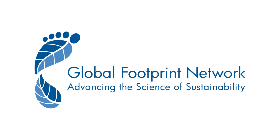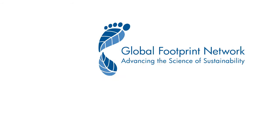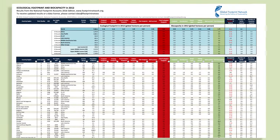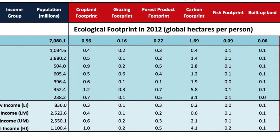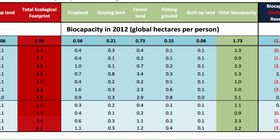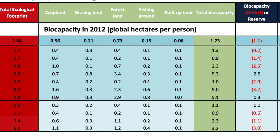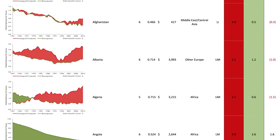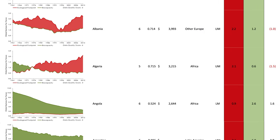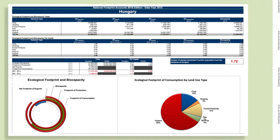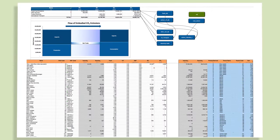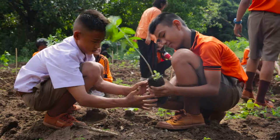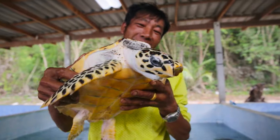Global Footprint Network measures more than just a country's carbon footprint. Our national footprint accounts can provide a comprehensive way to better understand the links between competing demands on our planet. Our accounts help national governments understand and manage their natural resources to help them make confident policy decisions and create a prosperous, resilient future for their residents.